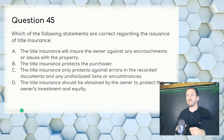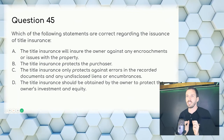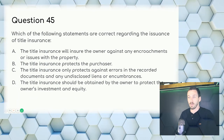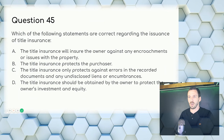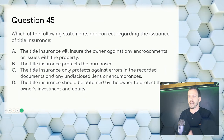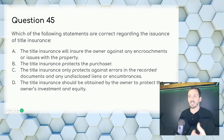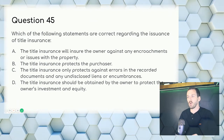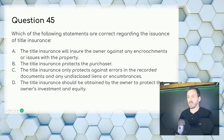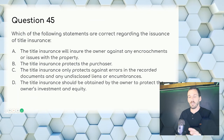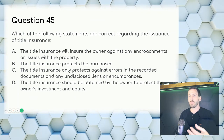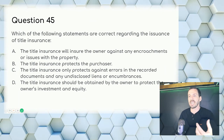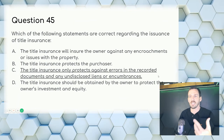Question 45: Which statements are correct regarding the issuance of title insurance? Encroachments are uncovered during surveys — that's why surveys are recommended. Title insurance protects the purchaser in a way, but not directly. It specifically protects against errors in recorded documents. Answer: C — title insurance only protects against errors in the recorded documents and any undisclosed liens or encumbrances.